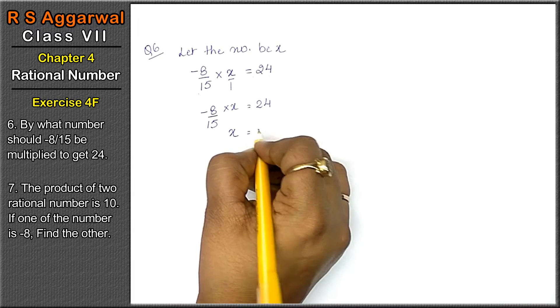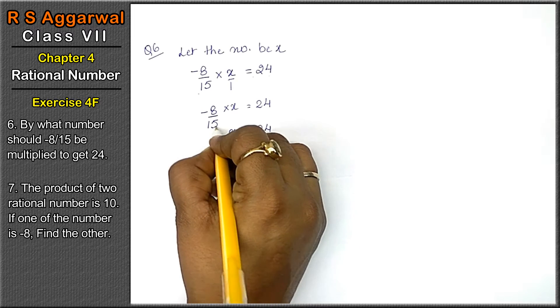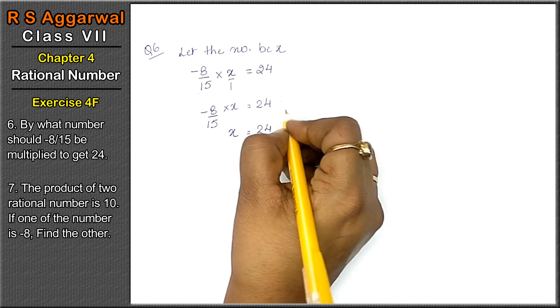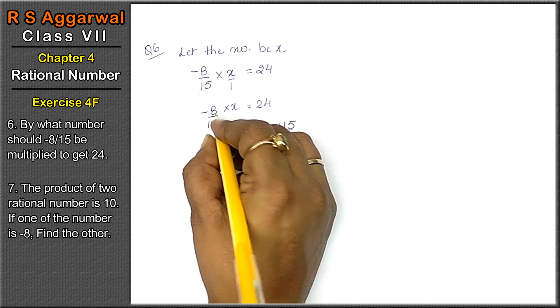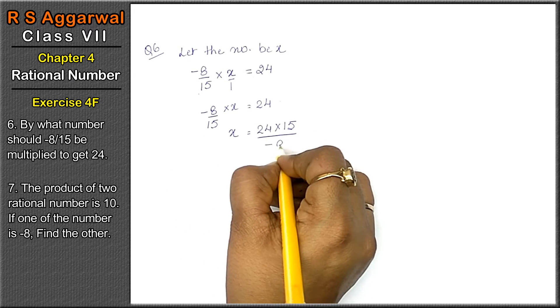Now, x ke terms as it is rahegi 24. Jo denominator mein tha equal to ke idhar aake numerator mein chala jayega. Aur jo numerator mein tha, woh equal to ke idhar aake denominator mein aage.